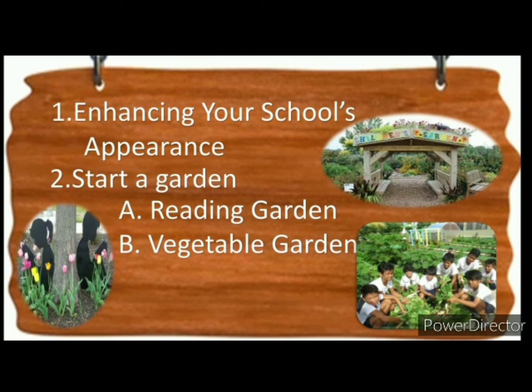First, enhancing your school's appearance: increasing your school's curb appeal is one of the fastest and least expensive ways of improving it. Take a look at your school and see what kind of thematic changes you might be able to make. Picking weeds, trimming hedges, planting flowers, and picking trash out of a field or parking lot are always quick ways of making things look cleaner.